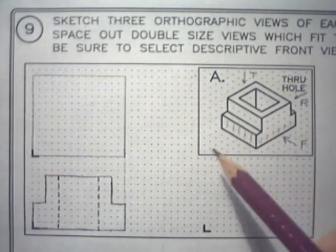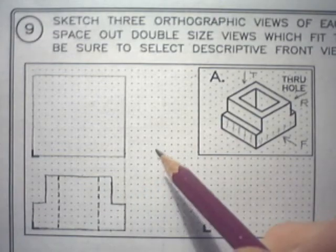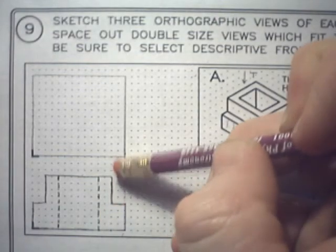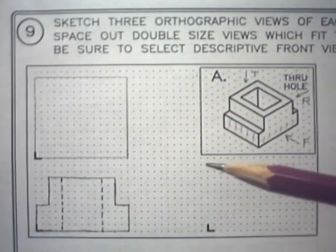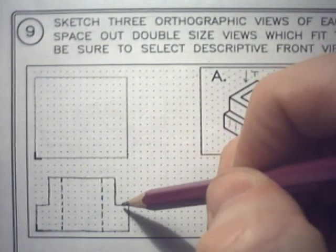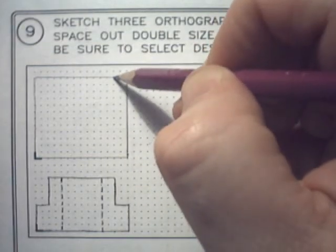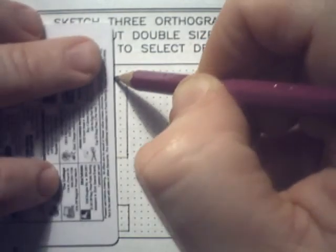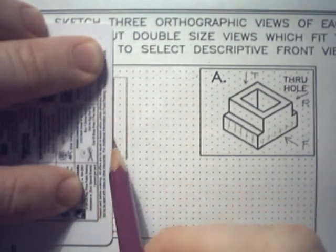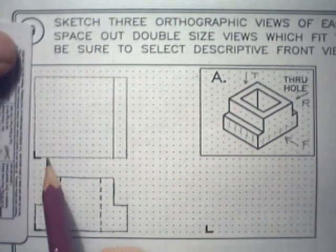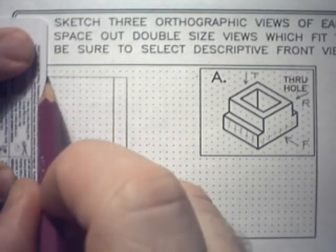So we need to have some kind of, well, we can erase the construction line right here. And we need to have some kind of, we need a visible line to represent this platform. Same is true for the left-hand side, like that.